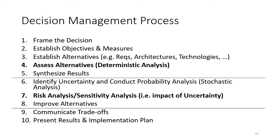Once we reach step four, we do an analysis of the benefits and drawbacks of the alternatives, typically in a deterministic way to lay the groundwork. In step five, we synthesize the results, understand them, and prepare to communicate them. Steps six, seven, and eight involve evaluating the initial results more carefully, particularly with regard to uncertainty — how much information we have and how certain we are of it, such as what the future may look like or what the yield will be in a production process. This incorporation of uncertainty is called stochastic analysis, as distinguished from deterministic analysis.